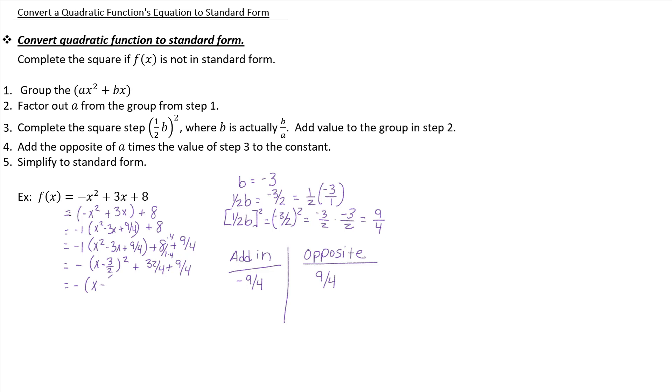So you are left with negative the quantity x minus 3 halves squared, plus, add those together, you get 41 fourths.